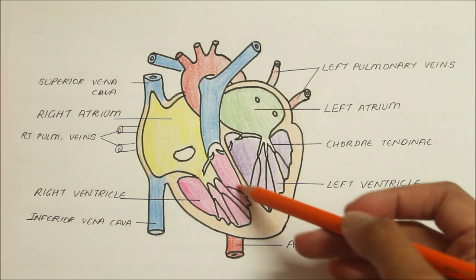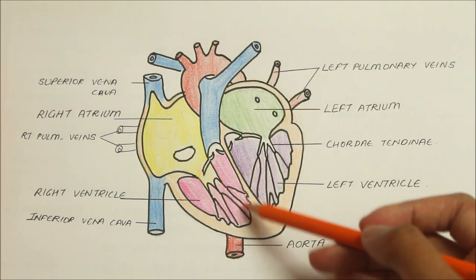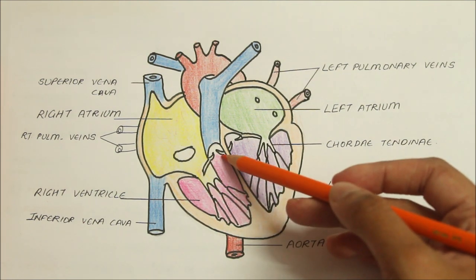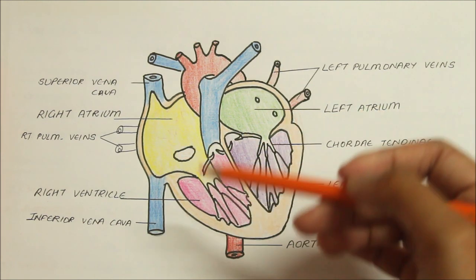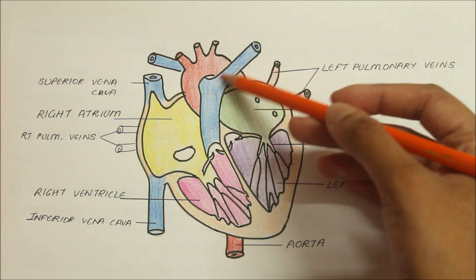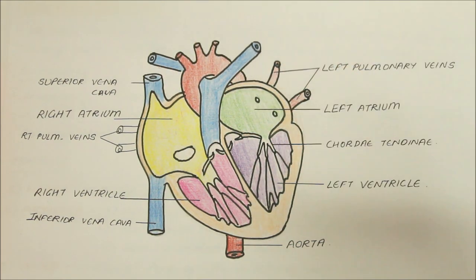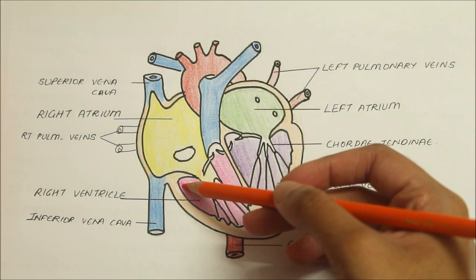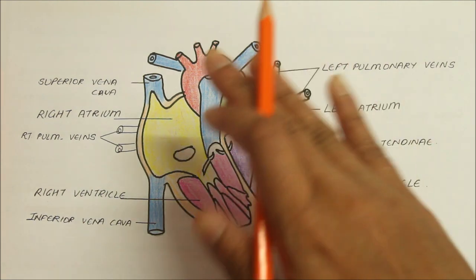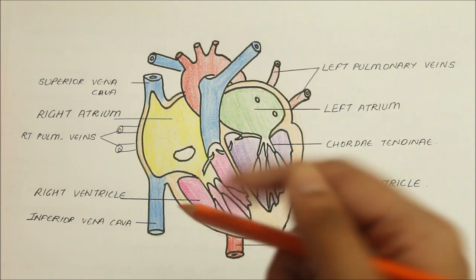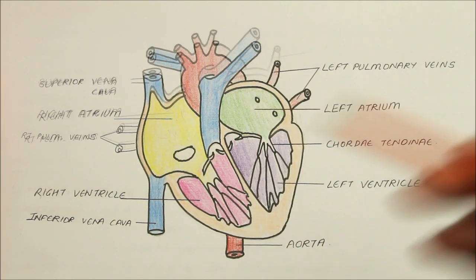Moving on to the right ventricle, looking at its position: the right ventricle is a triangular chamber which receives blood from the right atrium and pumps it to the lungs through the pulmonary trunk and the pulmonary arteries. The right ventricle forms the inferior border and a two-thirds part of the sternocostal surface and one-third part of the inferior surface of the heart.